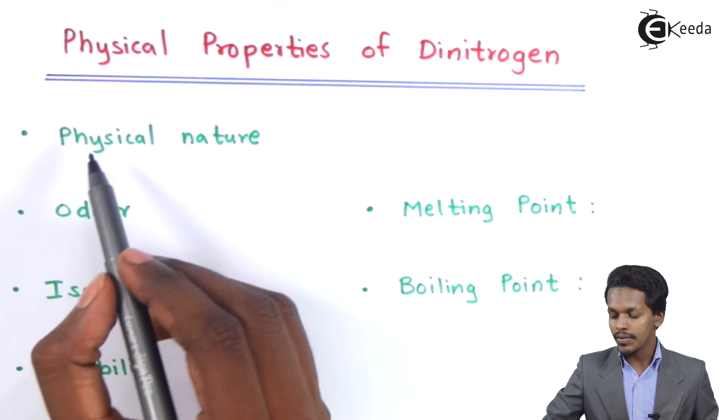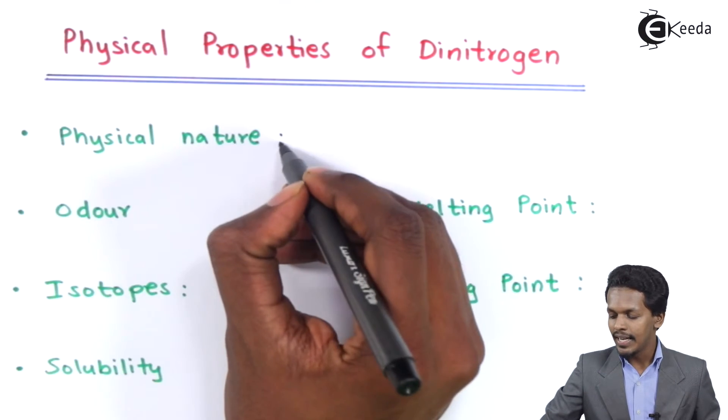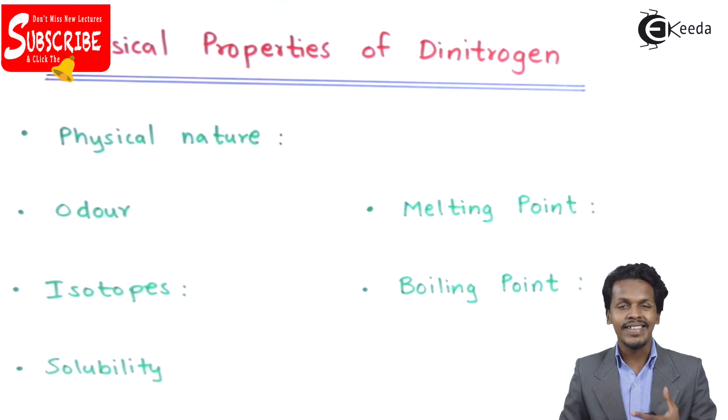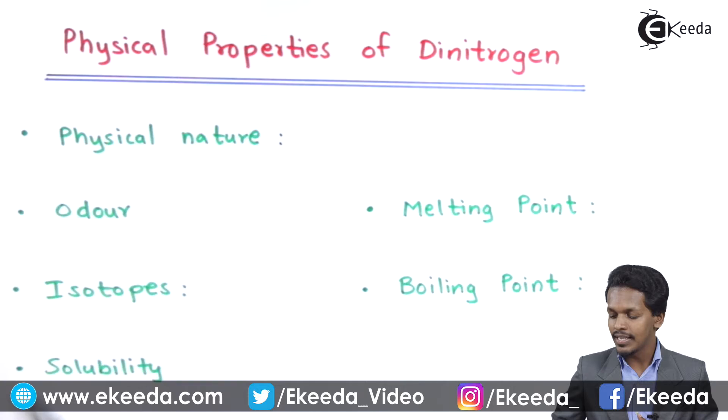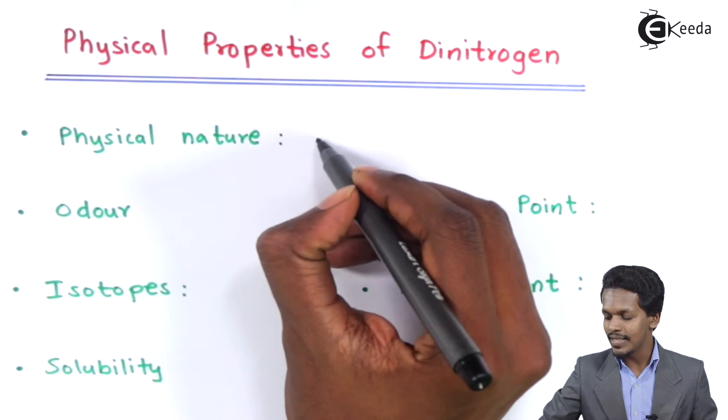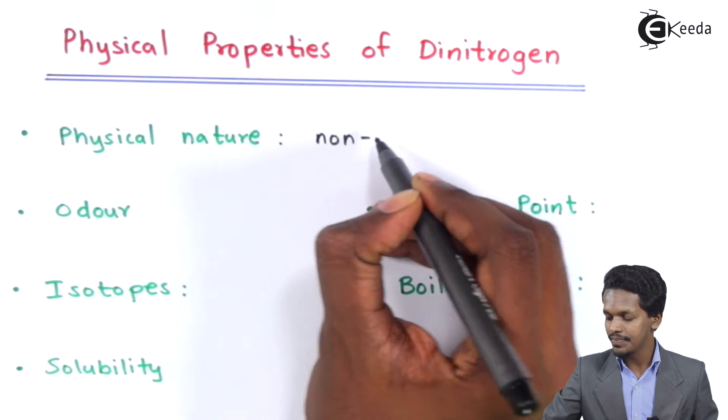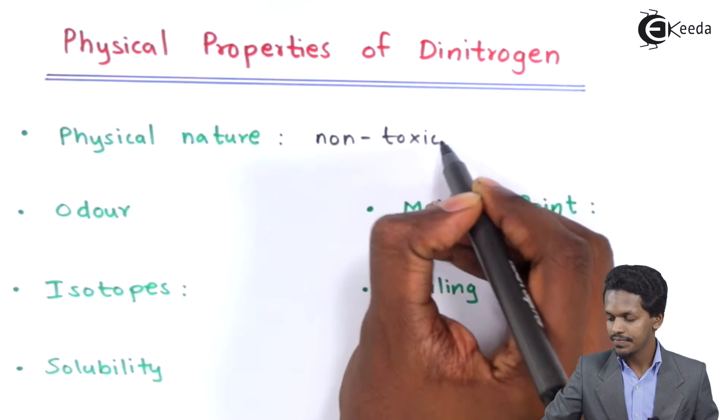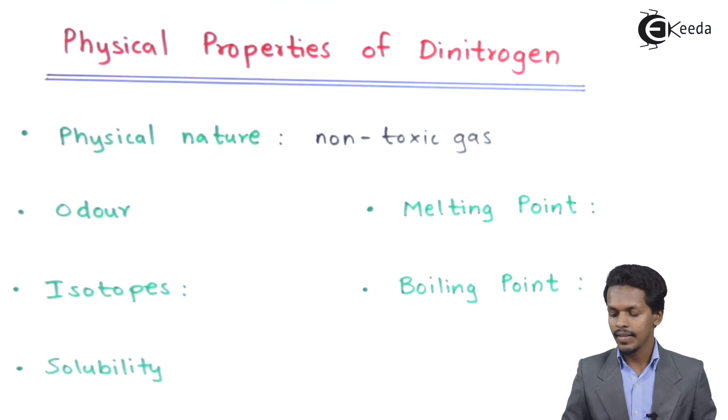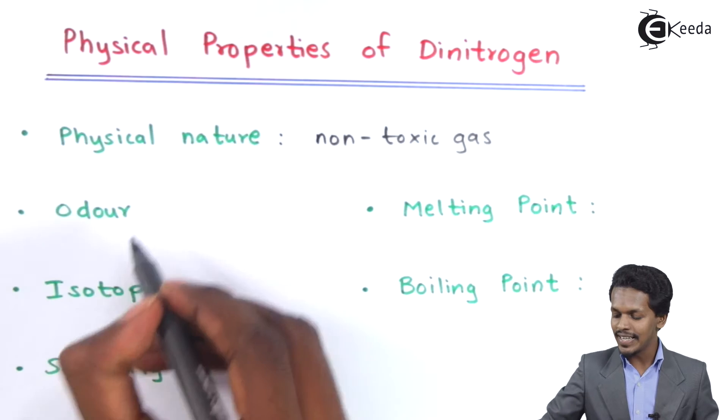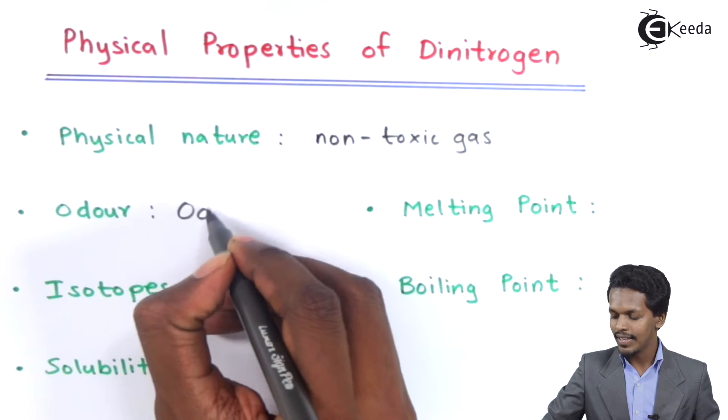Talking about the physical nature, dinitrogen is basically odorless as well as it is a gaseous molecule in the form of N2, and it is non-toxic. So that's the reason we could say that N2 is a gaseous form which is non-toxic gas. As I have discussed earlier, it is basically odorless gas.